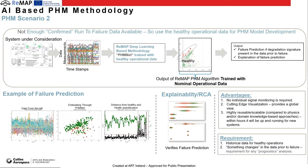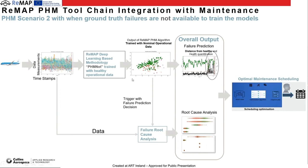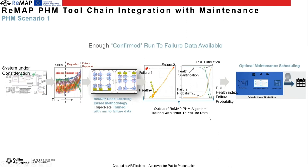These are the details of the PHM technology we are working on. Regarding how PHM integrates with the maintenance system: in PHM Scenario 2, the PHM tool gives out failure prediction decisions and root cause of failure prediction to the maintenance scheduling algorithms. In PHM Scenario 1, the PHM tool chain outputs the remaining useful life, health index, and failure probability, and then the maintenance scheduling algorithm uses those numbers to schedule optimal maintenance tasks, considering factors like inventory status and resource availability. Bruno will talk about the cutting-edge maintenance scheduling algorithms developed in Work Package 6.